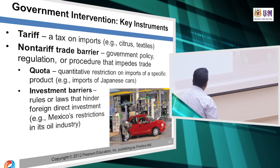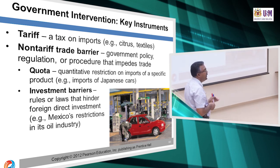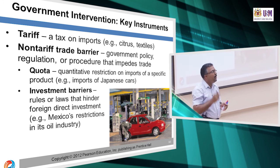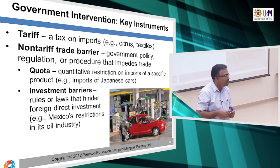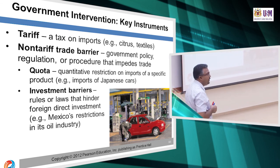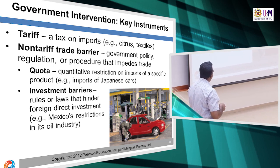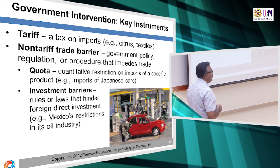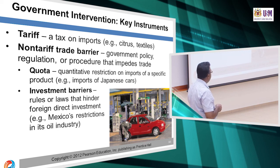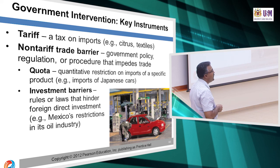The government can also impose non-monetary barriers — we call these non-tariff trade barriers. For example, quota means a quantitative restriction on the import of a specific product. For example, we limit the number of cars coming into the country from Japan, or we limit the number of steel or textile products entering the US.